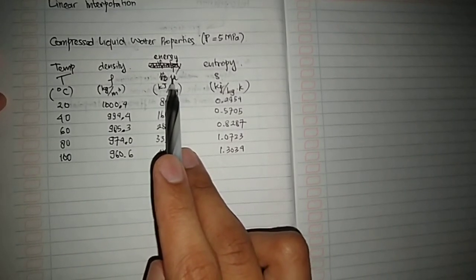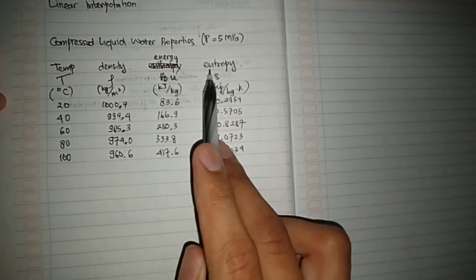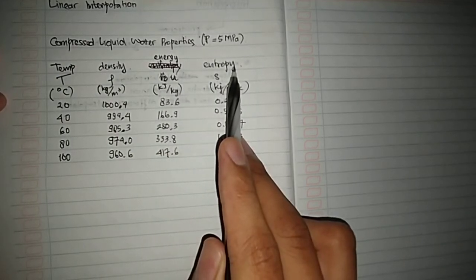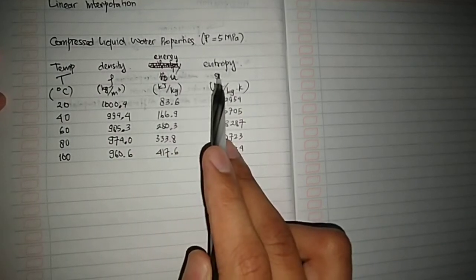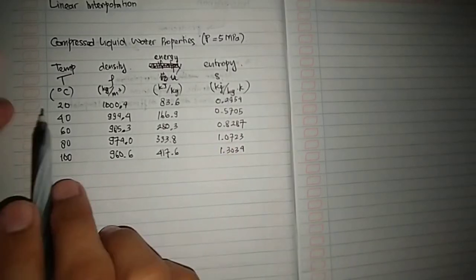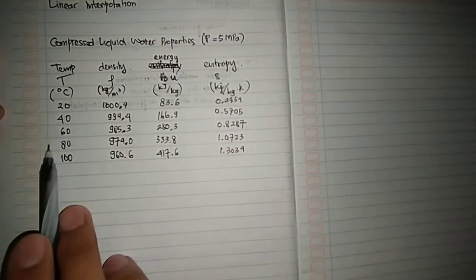And then the entropy, and the symbol for entropy is S. Now we have a lot of numbers here.